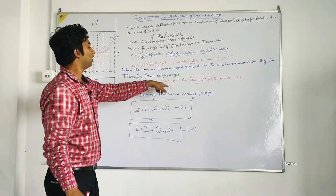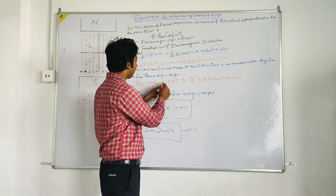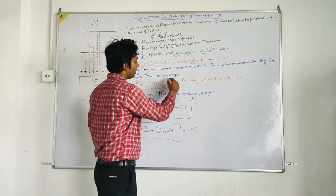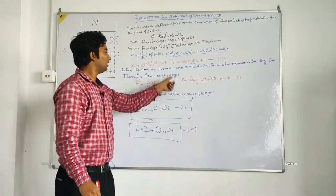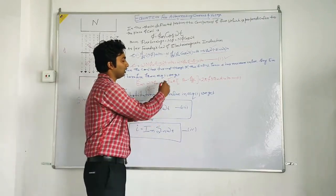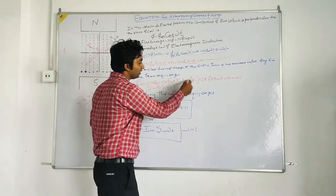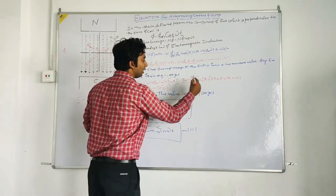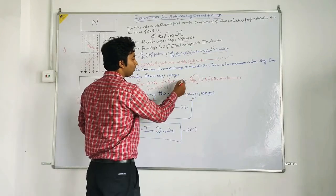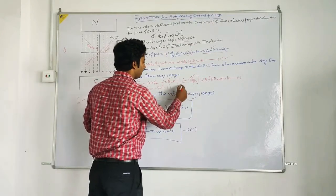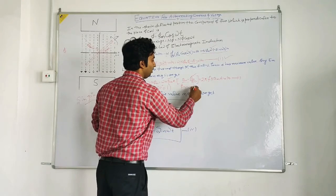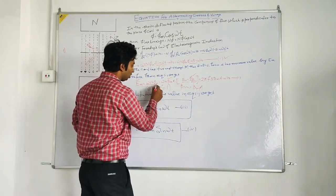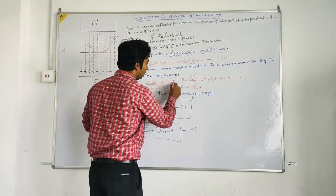Now we can further modify this equation as omega n bm into a, where bm stands for maximum flux density and a is the area of cross section. As we know maximum flux density b is phi m by a. So from this equation we will get phi m equal to bmax into the area of cross section. So in this fashion we modify this equation.